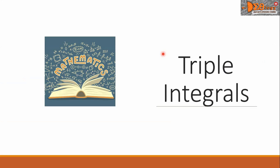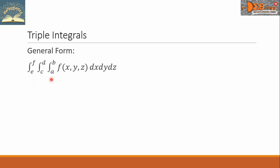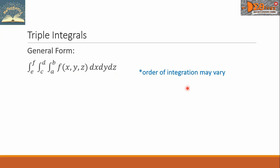Hi everyone. Today we're going to study triple integrals. This is the general form. The first integral from e to f, the second integral from c to d, the third integral or the innermost from a to b, of the function f of x, y, z. Here we have dx as the innermost, followed by dy, and dz is the outer integral. In some problems, the order of integration may vary. For this video, we will just focus on this general form.